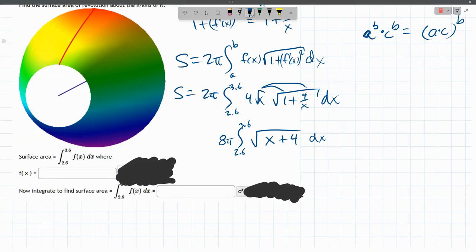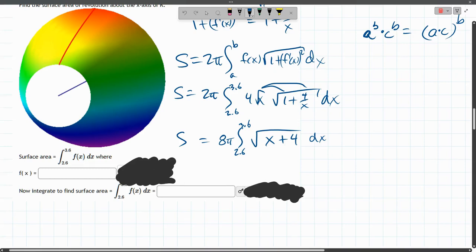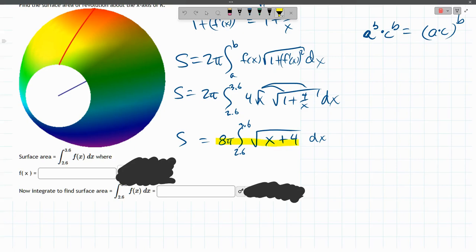But if you look, they wrote it just as f of x. So what they're actually describing is take away the integral, but it's all the function part right here. So they want to know what function would we integrate from 2.6 to 3.6 to get the surface area. And the answer is 8π square root x plus 4.